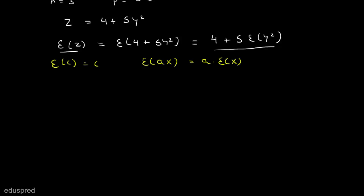Because we are tossing the coin 3 times, the possible values that Y can take are 0, 1, 2, and 3. From these, the values that Y squared can take are 0, 1, 4, and 9. We can then find the corresponding probabilities using the binomial formula, since Y follows a binomial distribution.